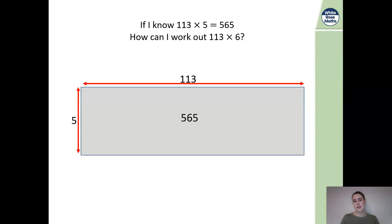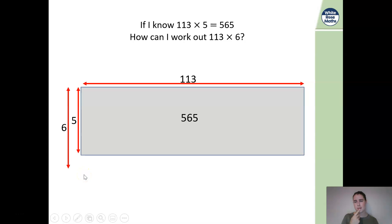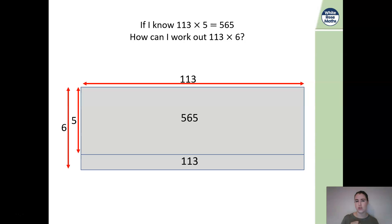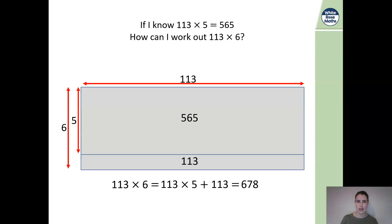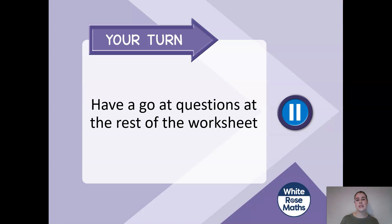Now let's consider: if I know that 113 times 5 is 565, how can I work out 113 multiplied by 6? This time we're making the length bigger — rather than 5 lots of 113, I need 6 lots of 113, which means I add an additional 113 to my answer. So 113 multiplied by 6 is 113 multiplied by 5 (which is 565) plus 113, giving the answer 678. I've made this side one times longer, so I just add 113 to my original number.